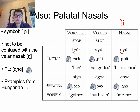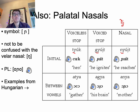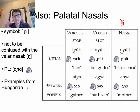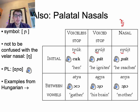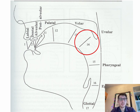The palatal nasal occurs in many languages, such as Spanish 'año,' French, Vietnamese, Quechua, which we'll look at next, and others. So those were the palatals — palatal stops and palatal nasals — and now we move on to the next most popular place of articulation for stops: uvular.